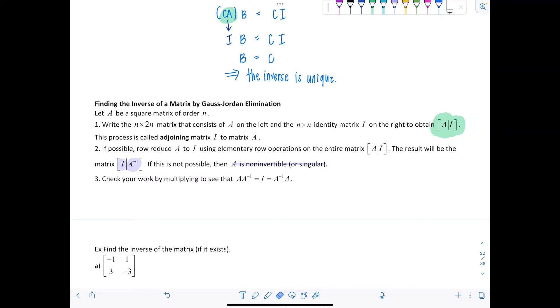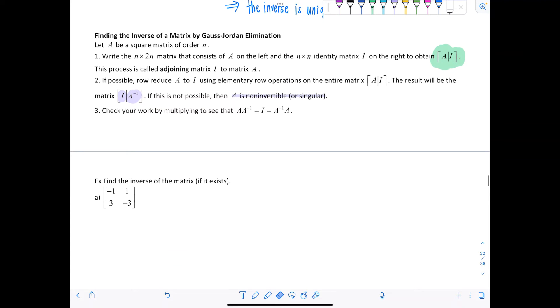I have a couple examples for you. We'll learn another way to find the inverse of a two by two matrix later. But this process is by using Gauss-Jordan elimination and it works for any square matrix. So here we go.